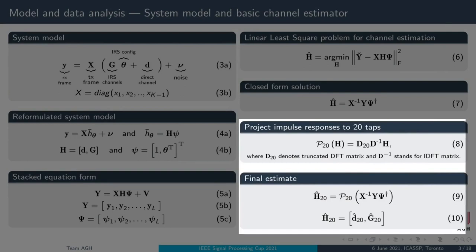Moreover, we know that filters have just 20 tabs in time domain. This can be utilized by making projection of the least-square solution on 20 tabs.